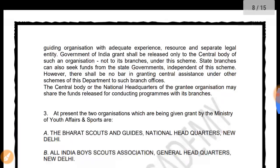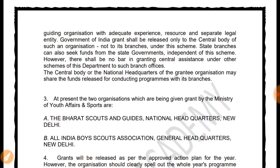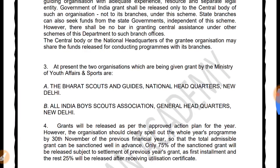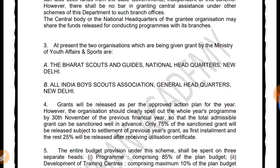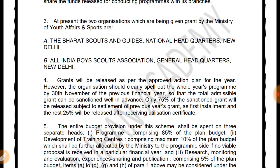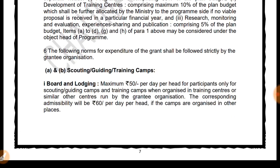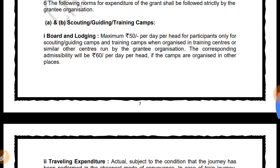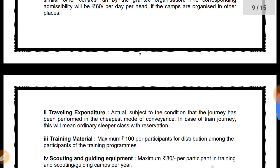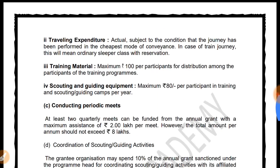Two organizations are currently working and receiving grants from the Ministry of Youth Affairs and Sport: Bharat Scouts and Guides National Headquarters, New Delhi, and All India Boys Scout Association General Headquarters, Delhi. For scout and guide training camps, boarding and lodging of a maximum of 50 participants per day per head is covered. Travel expenditure and training materials are also provided.